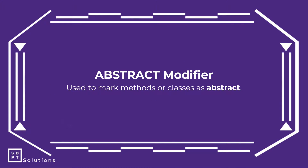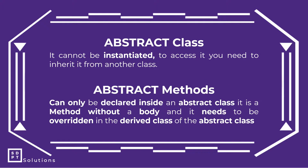So ano ba yung abstract modifier? Eto yung gagamitin natin ngayon — to mark methods or classes as abstract. Pwede kasi maging abstract yung method or yung class natin. So abstract class: hindi siya pwede i-instantiate. Para ma-access natin, kailangan natin i-inherit yun sa ibang class — sa mga derived class. Yung abstract methods naman can only be declared inside an abstract class. So kung hindi nyo pa napapanood ang previous episodes, please do watch para mas mag-gets nyo tong episode na to.